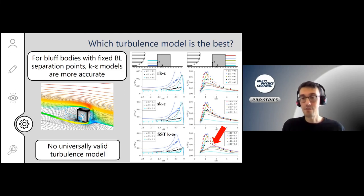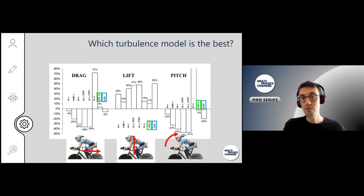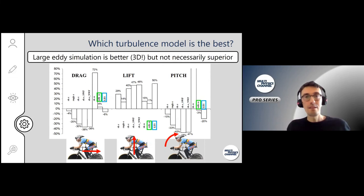Another example: this is an aerodynamic body, but now we compare RANS models with Large Eddy Simulation. We see the best performing RANS model, SST k-omega, gives a good prediction. Large Eddy Simulation for drag, yes; for lift, was not so accurate. So LES gives an acceptable accuracy, but it's not always superior to the other models. You have to be aware of that.